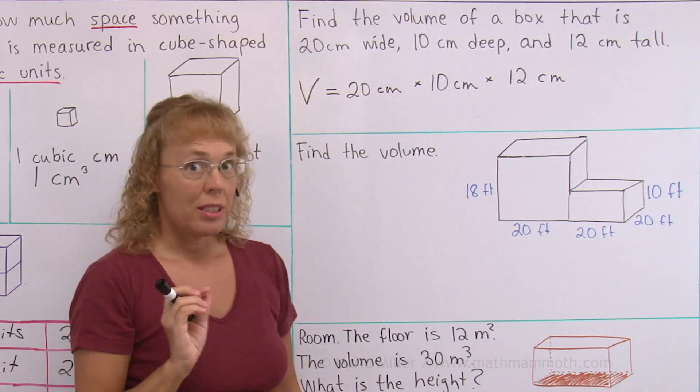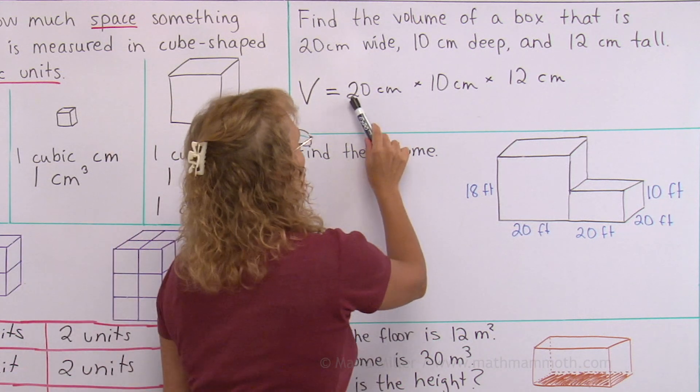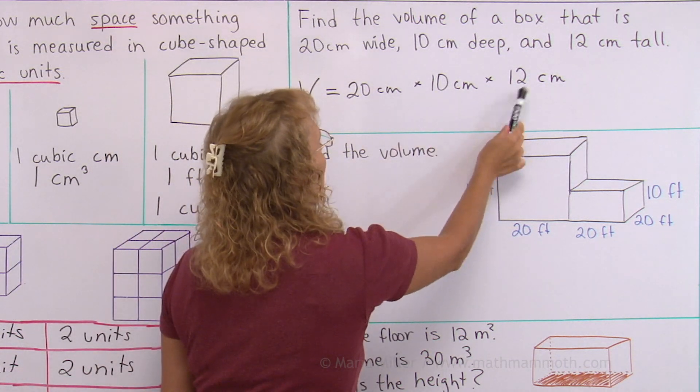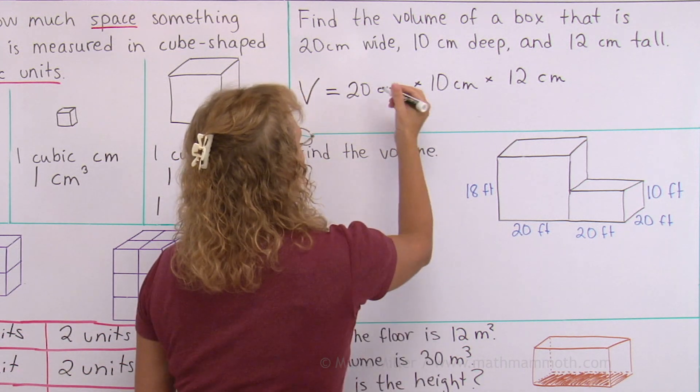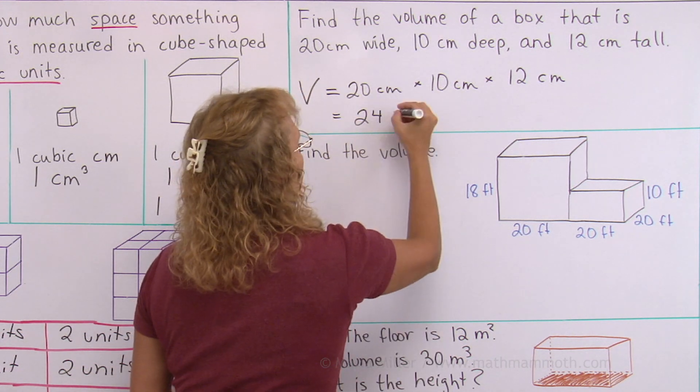I can do that with mental math. It's pretty easy. So this is 2 times 1 times 12 and then I tag on two zeros, so I will get 24, then 0, 0.